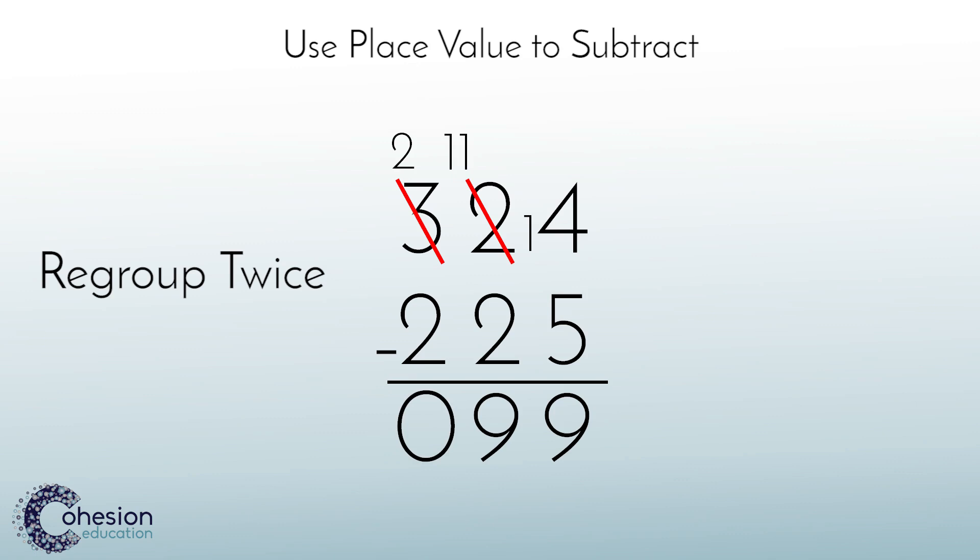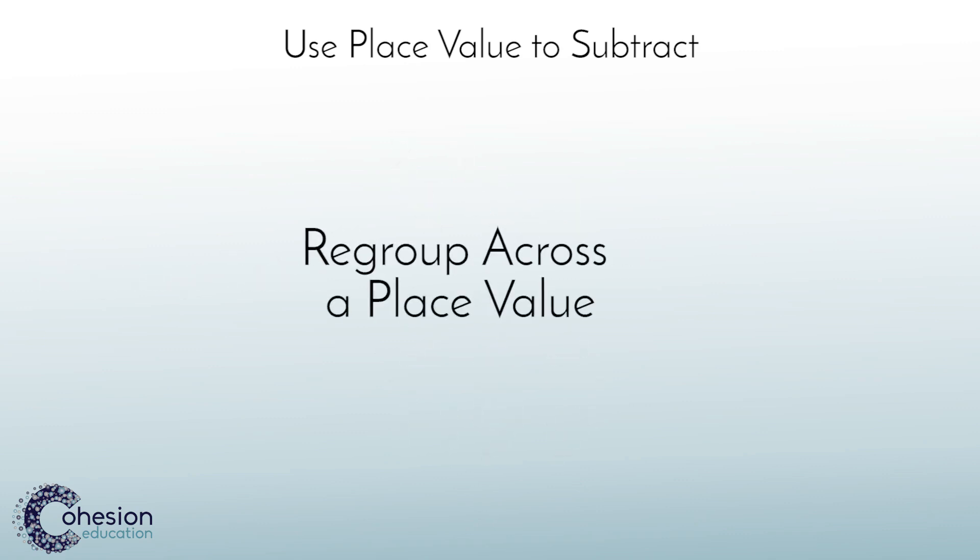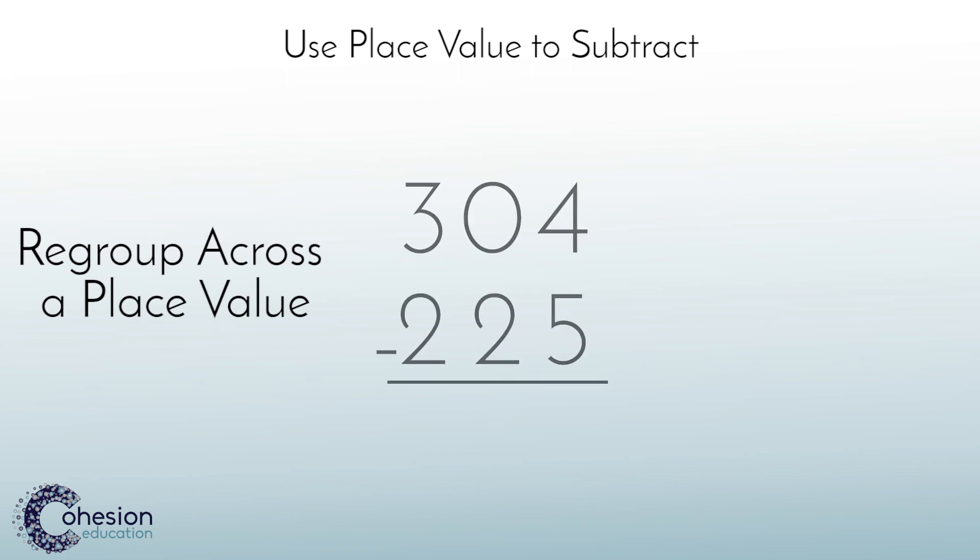The most difficult situation for students when using this method is when they have to regroup across a place value, like in this example. As we've established, five can't be subtracted from four. So, we must regroup. Only there's a zero in the tens place. So, what do we regroup from? The next highest place value, which is the hundreds. This next process can be very difficult for students to grasp, especially when they fail to recognize place value and just see these digits as a three, a zero, and a four.